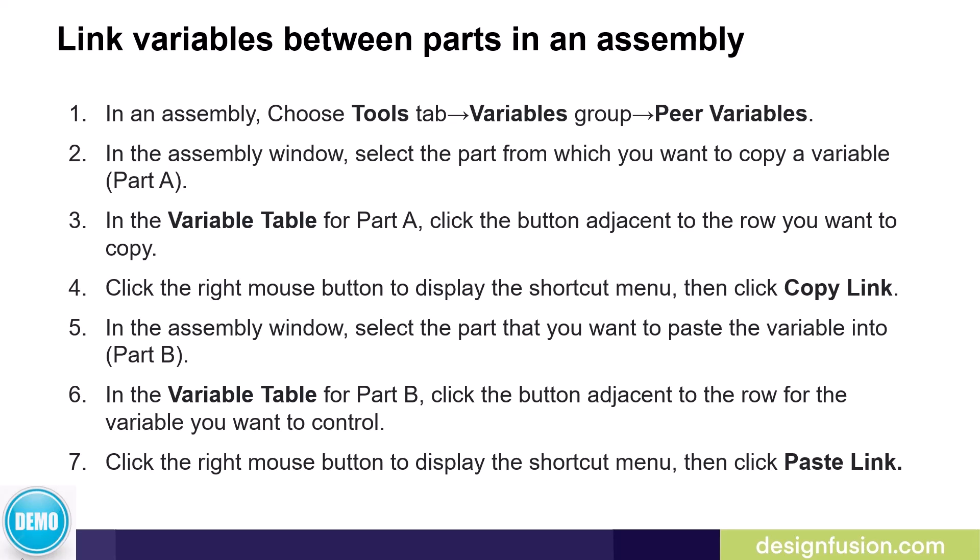To link variables between parts in an assembly, do the following. Select the Peer Variables command and select the part from which you want to copy a variable — we'll call this Part A. This will place you in the Variable table for Part A. Click the button adjacent to the row that you want to copy to highlight the entire row. Right-click to display the shortcut menu, then click Copy Link. Next, still in the Peer Variable command, select the part that you want to paste the variable into — we'll call this Part B. In the Variable table for Part B, click the button adjacent to the row for the variable you want to control, highlight the entire row, right-click to display the shortcut menu, then click Paste Link.